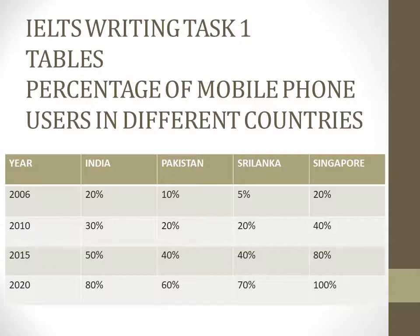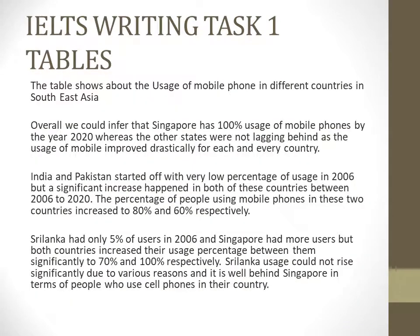There would be questions wherein you will also be given two tables together or a single table as it is given here. This table talks about four countries — India, Pakistan, Sri Lanka, and Singapore — and the percentage of mobile phone users in these different countries from the year 2006 until 2020. Let's see how I have written the answer.